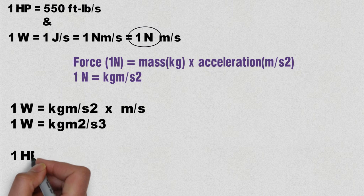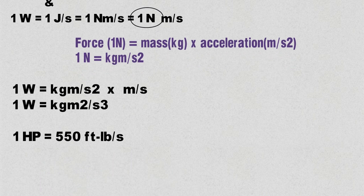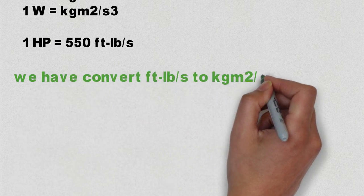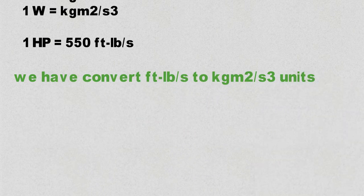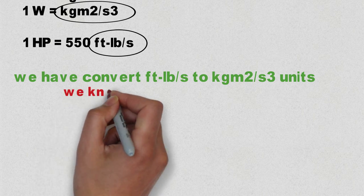And we know that one horsepower is equal to 550 foot-pound per second. So from this both we get particular units, but the problem is that both system of units are different. One is in MKS, that is meter-kilogram-second, and another is in FPS, foot-pound-second.